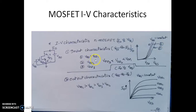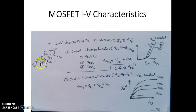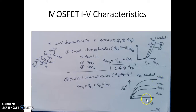Looking at the relative values of VDS: VDD3 is the least and VDD1 is the maximum value. The output characteristics plot ID versus VDS with a constant VGS. We can see the linear region and then saturation for different values of VGS. In all cases the value of VGS must be greater than the threshold voltage.